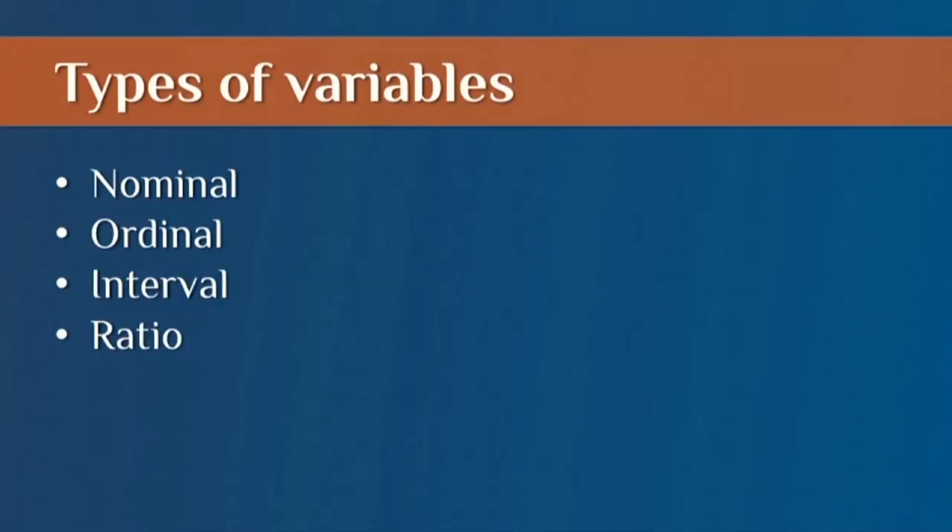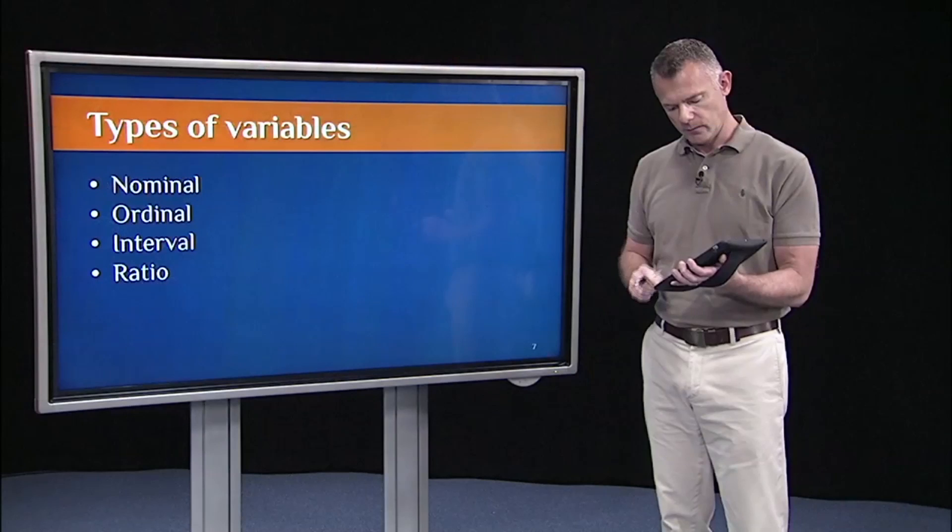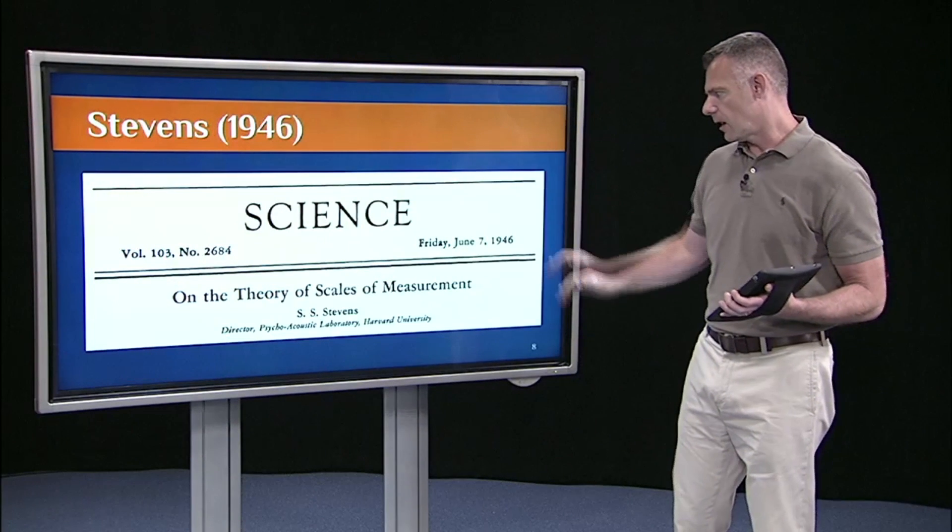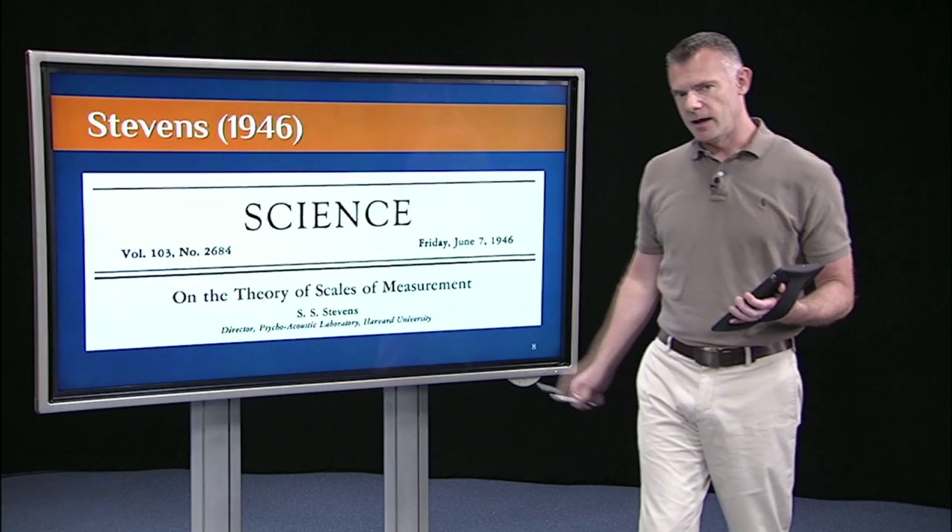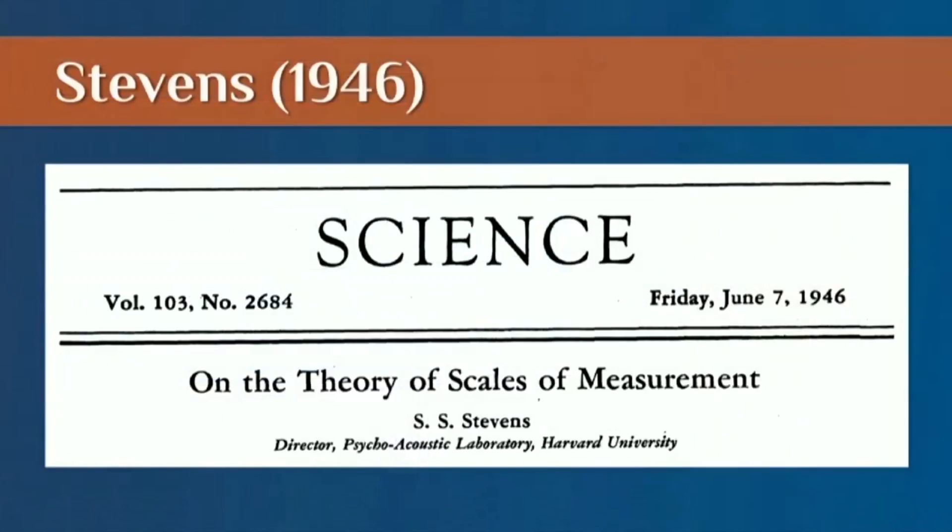You might think, where did these four kinds come from? They come from a classic cognitive psychologist, S.S. Stevens. This is a classic paper published in Science in 1946 where he outlined these four types of variables or four types of measurements.